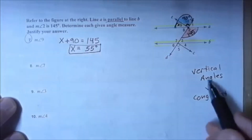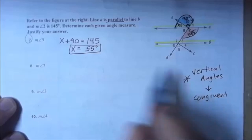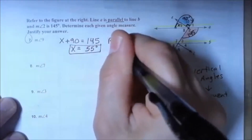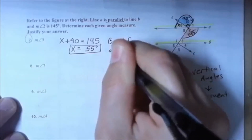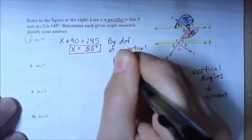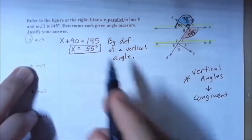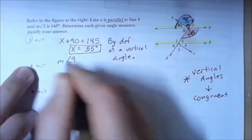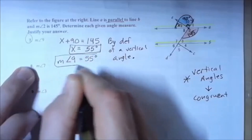So angle nine is 55 degrees, and the justification is: by definition of a vertical angle.